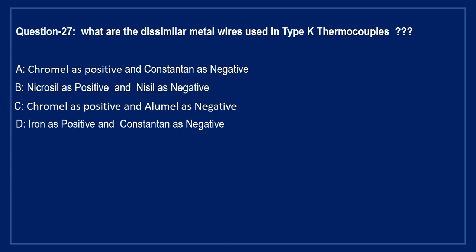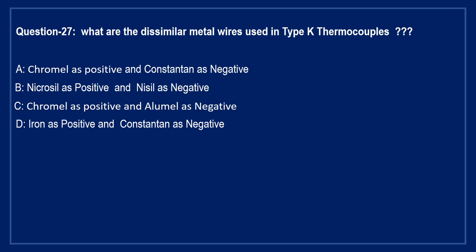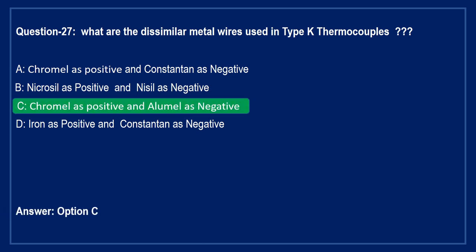Next question: what are the dissimilar metal wires used in K-type thermocouple? Option A: chromel as positive and constantan as negative. Option B: nicrosil as positive and nisil as negative. Option C: chromel as positive and alumel as negative. Option D: iron as positive and constantan as negative. The correct answer is Option C — K-type thermocouples are made of chromel (positive) and alumel (negative).